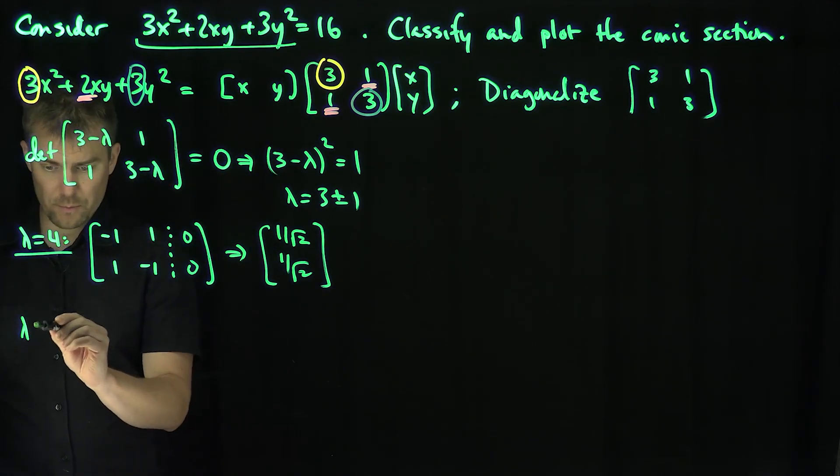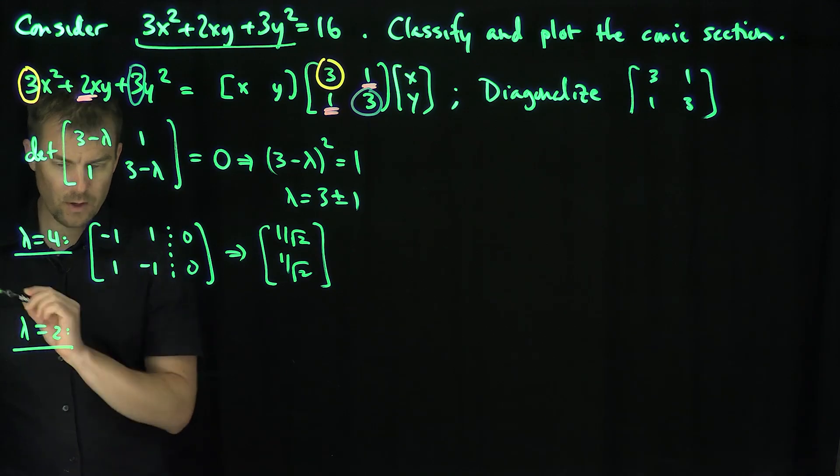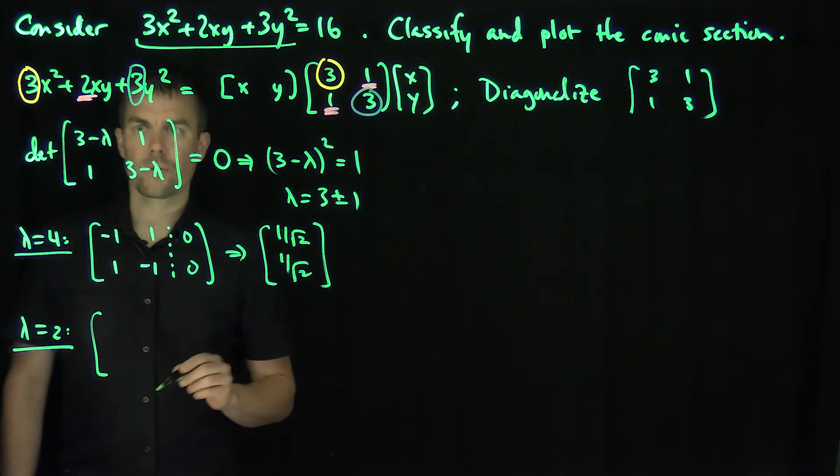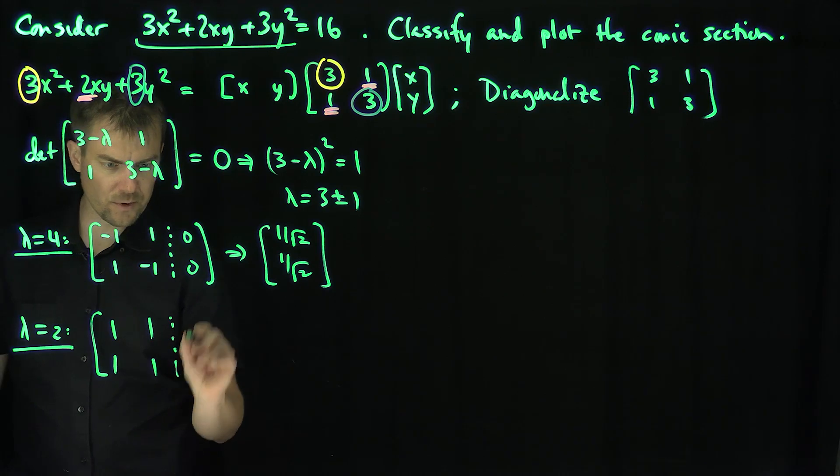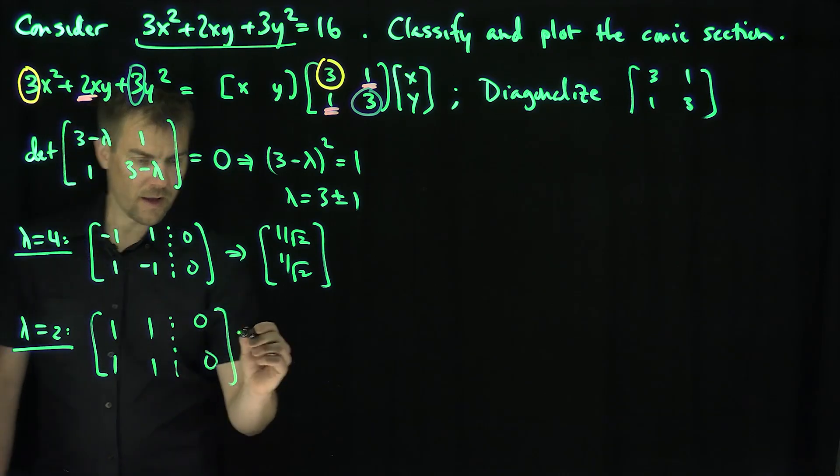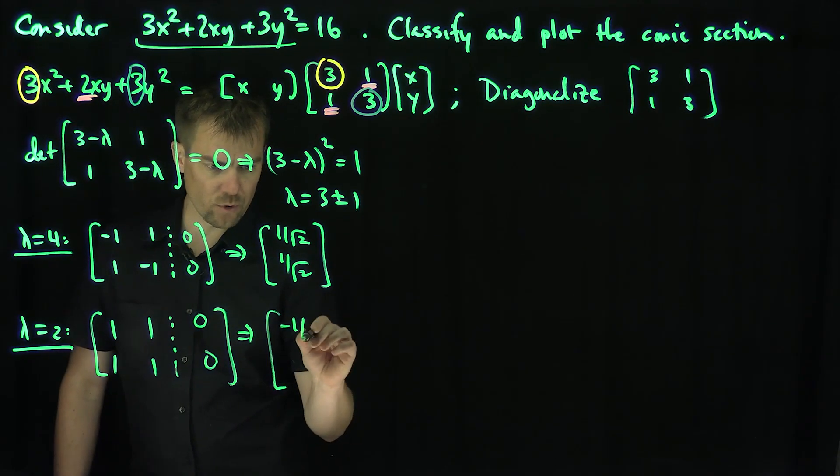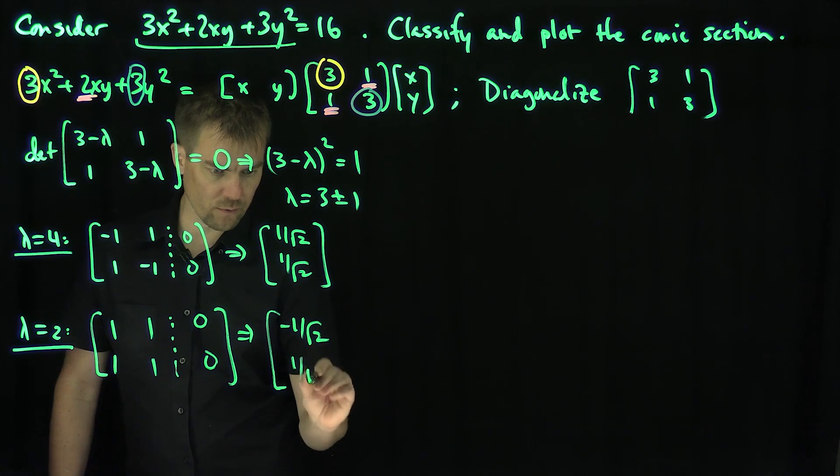When λ = 2, we're going to have [1, 1; 1, 1] augmented with zeros. And that will give me, now I'll do a -1/√2 to give pure rotation, and then a 1/√2 like that. Great.